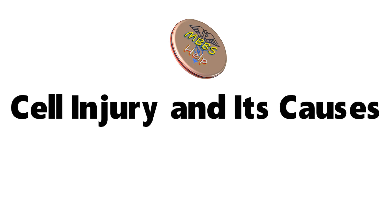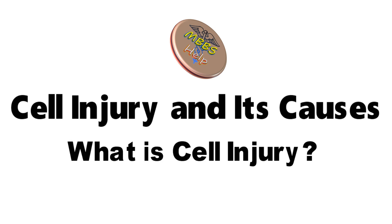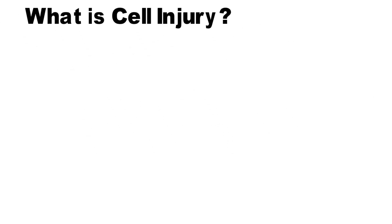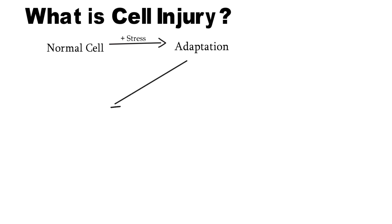The first question that comes to mind is: what is cell injury? Basically, the question itself tells us there is injury into the cell. We will try to understand how this injury happened, who did this, and how severe it is. Suppose there is a normal cell and some kind of stress is placed on it, and the cell tries to adapt itself to the stress environment. This process is known as adaptation.